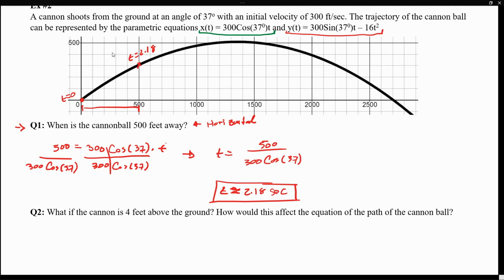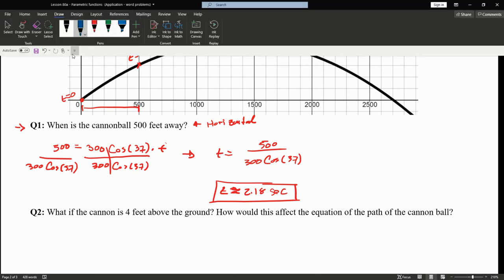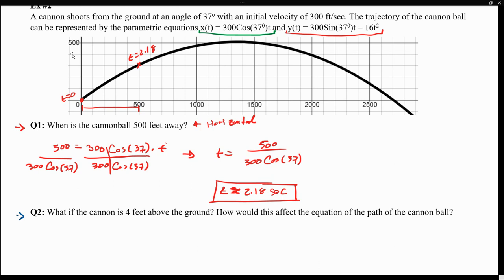Now for question 2: what if the cannon is 4 feet above the ground? How will this affect the equation of the path of the cannonball? The original scenario had the cannonball shot from the ground, but now we place a platform 4 feet above the ground and shoot from there. How does this affect the parametric equations for the path of the cannonball?